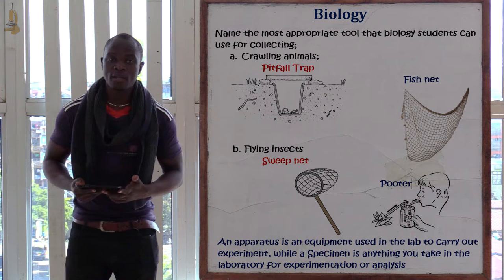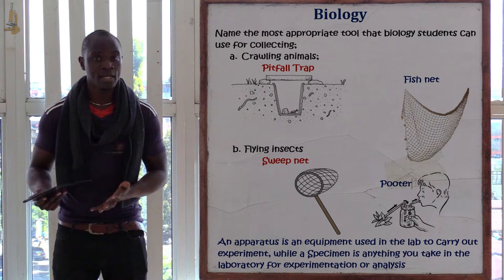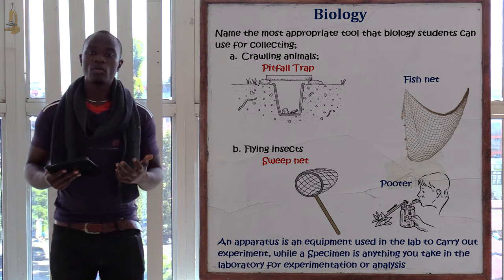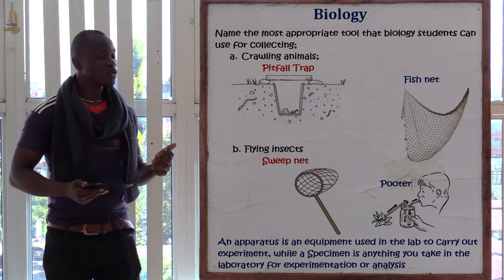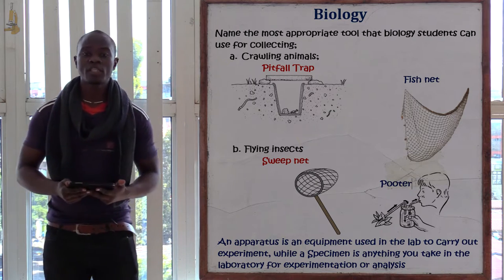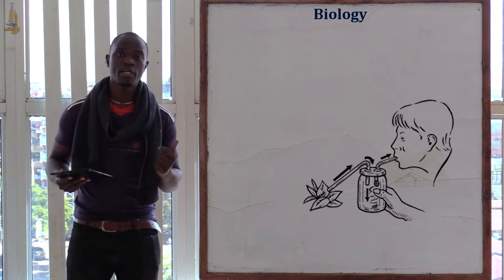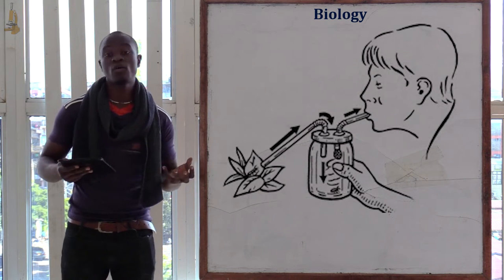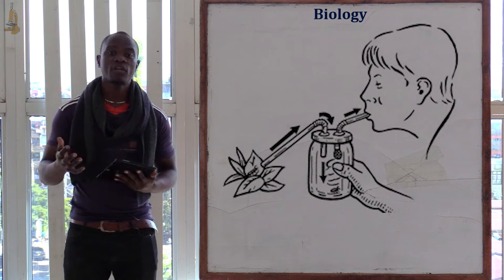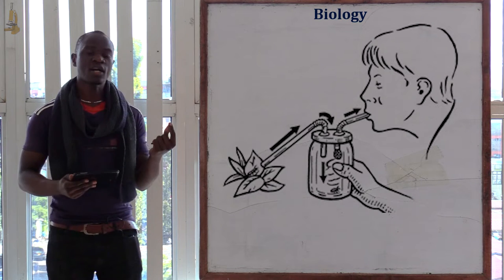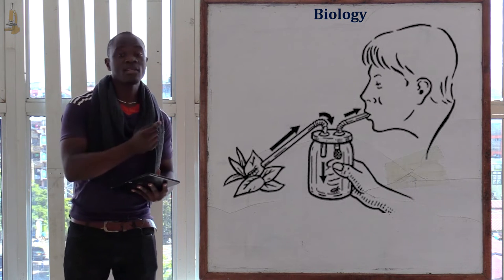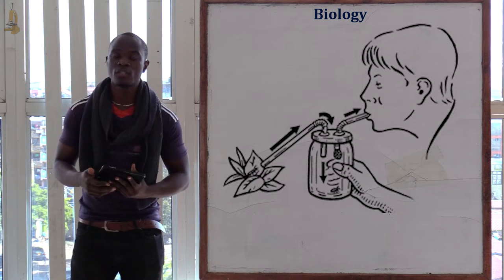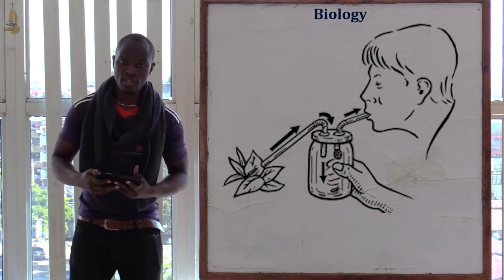For catching aquatic animals or fish, we use a fish net. Also, we have the pooter, whose function is to capture insects on the back of trees or insects found crawling on the wall or on the ground. You suck on one side and then use the free end to capture the small insects.